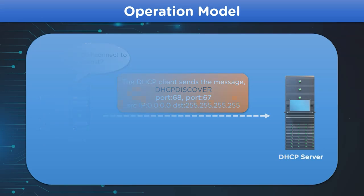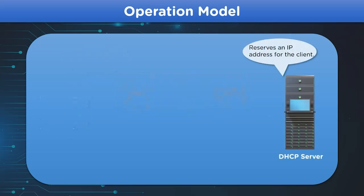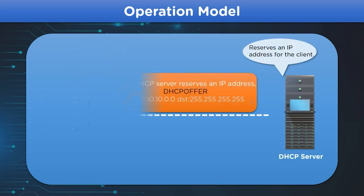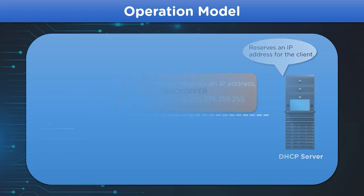The second phase is when the DHCP server receives the DHCP message. According to the message, the DHCP server reserves an IP address for the client along with network configuration information including subnet mask, default gateway, and preferred DNS server.